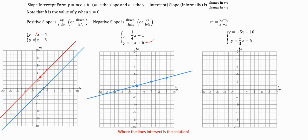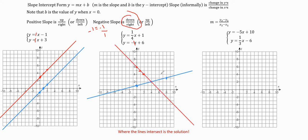Then we're going to graph y equals negative x plus 6. We start at the y-intercept, positive 6, so we go up 6 and put a dot there. Our slope is negative 1, which is the same thing as negative 1 over 1. This is negative slope, so we go down and to the right — down 1 and right 1 from the first dot. We can do that again. As long as we make a straight line, where the lines intersect will be our solution. It looks like the lines intersect at the point (4, 2).